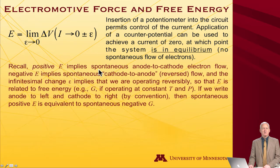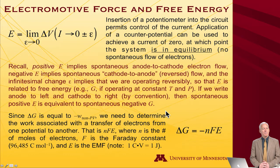So if a positive E implies spontaneous anode to cathode electron flow, then a negative E would be spontaneous cathode to anode. And we can relate this to the free energy if we have our cell on a desk at constant temperature and constant pressure. A positive E spontaneous is equivalent to a negative delta G spontaneous in free energy. Delta G is the non-PV work.